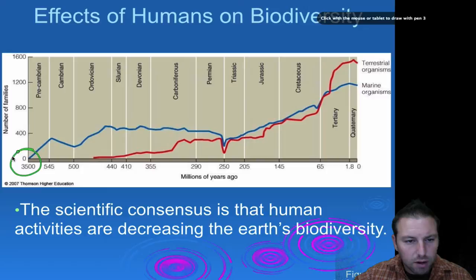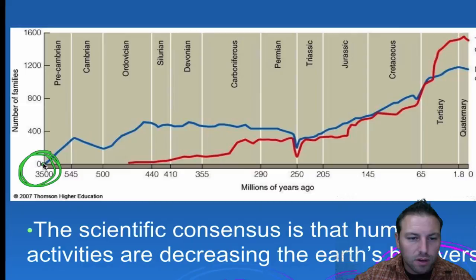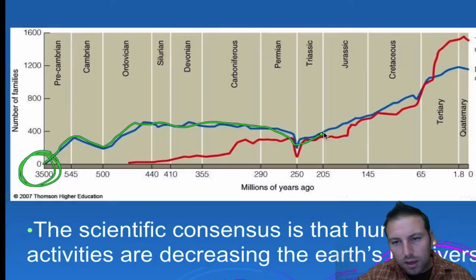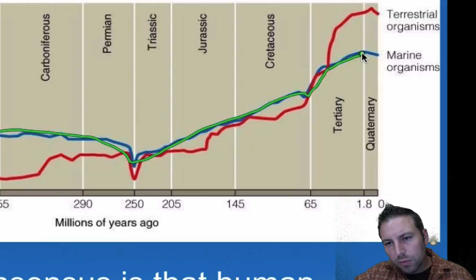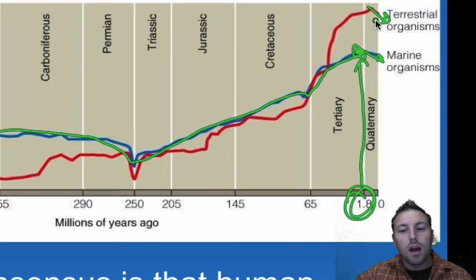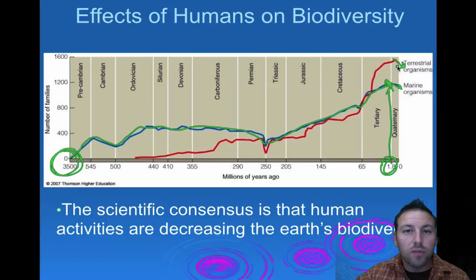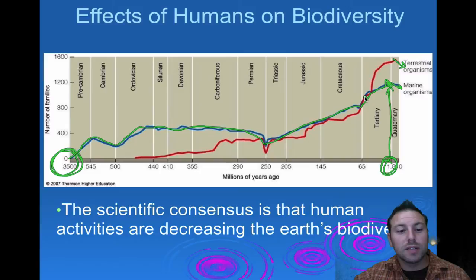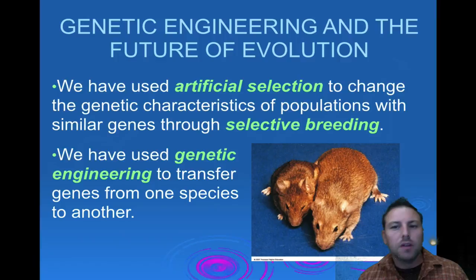On this timeline going back millions of years, we can see life restarting after major events, gradually increasing with a few dips along the way, then increasing again. Around 1.8 million years ago, humans appear, and we notice a downward trend begins. Scientists are worried about this correlation — the effect we're having on the environment and whether it's changing enough to cause another mass extinction. Looking at this data, it would have a tendency to lead you to believe so.